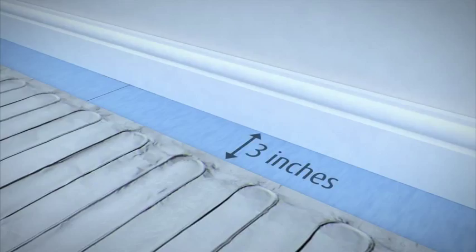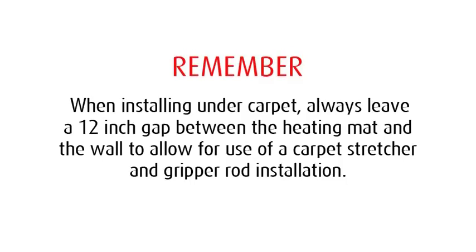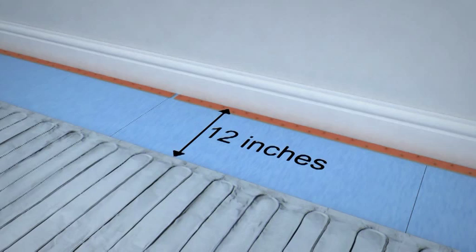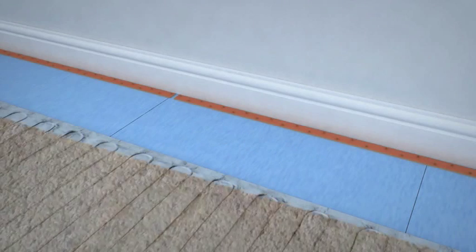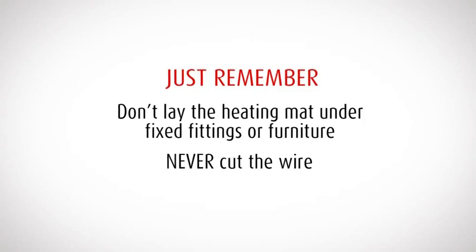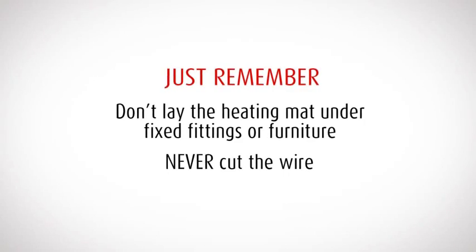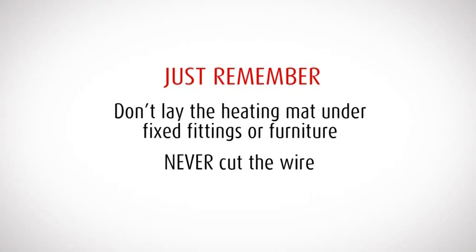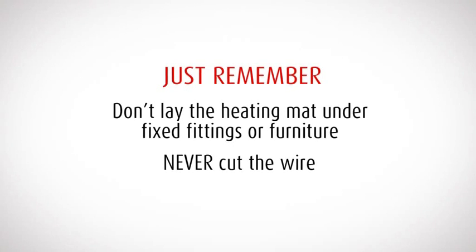In a laminate or floating engineered wood installation, roll down the foil keeping a minimum of a three-inch gap along the walls. When installing under carpet, always leave a 12-inch gap between the heating mat and the wall to allow the use of a carpet stretcher and gripper rod installation. Remember to not lay the foil heating mat under fixed fittings or furniture and never cut the heating wire.